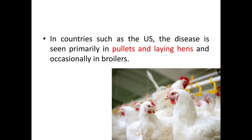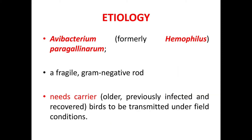Now let's see the etiology of Infectious Coryza. The causative organism is Avibacterium paragallinarum, also known as Haemophilus paragallinarum. It is a fragile gram-negative rod and it needs a carrier bird to be transmitted under field conditions. The carriers are usually older, previously infected and recovered birds.